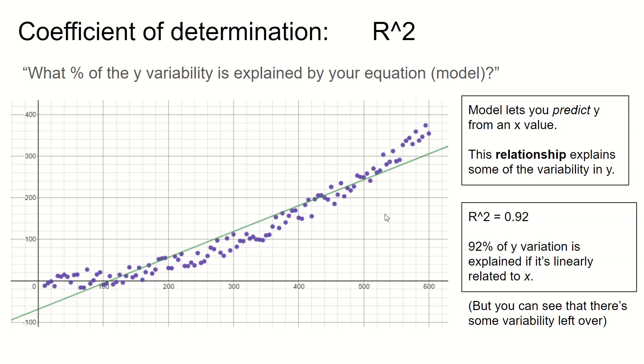But the problem is you can see that there's still some variability left over. What that means is if I was going to use my model to predict what's the Y value when X is 600, I would predict here. But our actual data doesn't always perfectly fit our model. We have some data points are above, some data points are below. And so this extra leftover variability, looking at the residuals, how far above or below our model is our data. That's the remaining 8% of the variation that we're failing to explain with our green line.